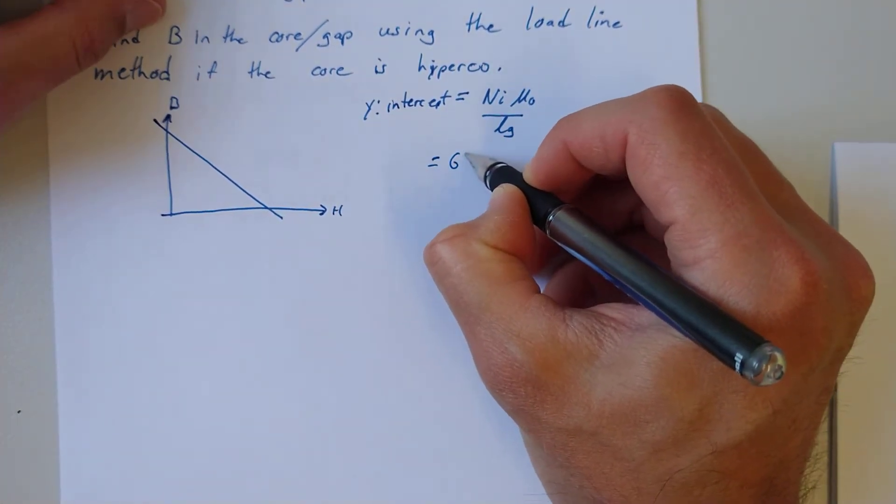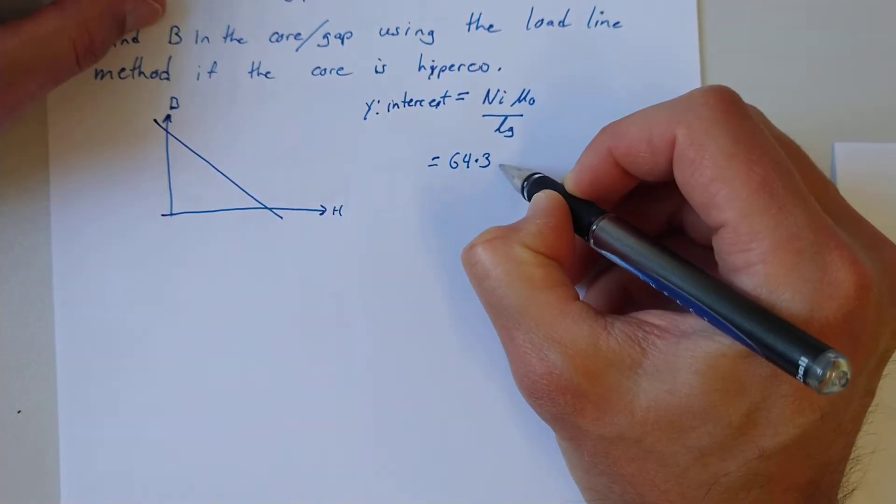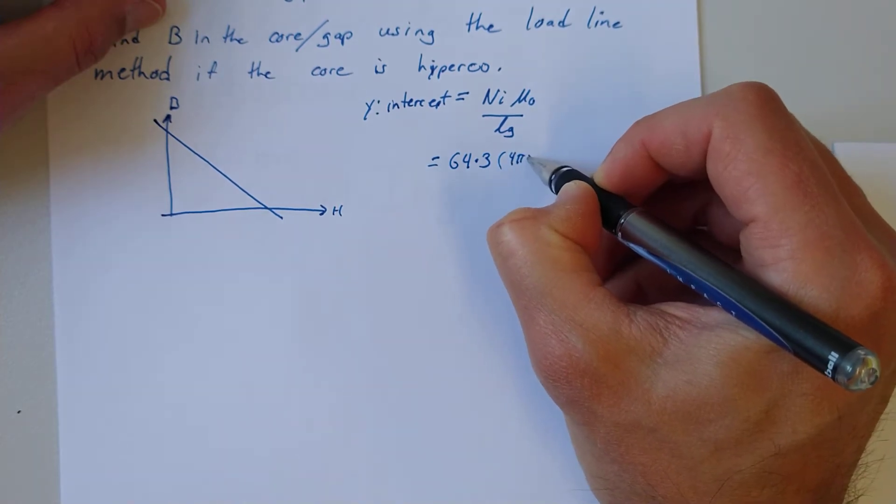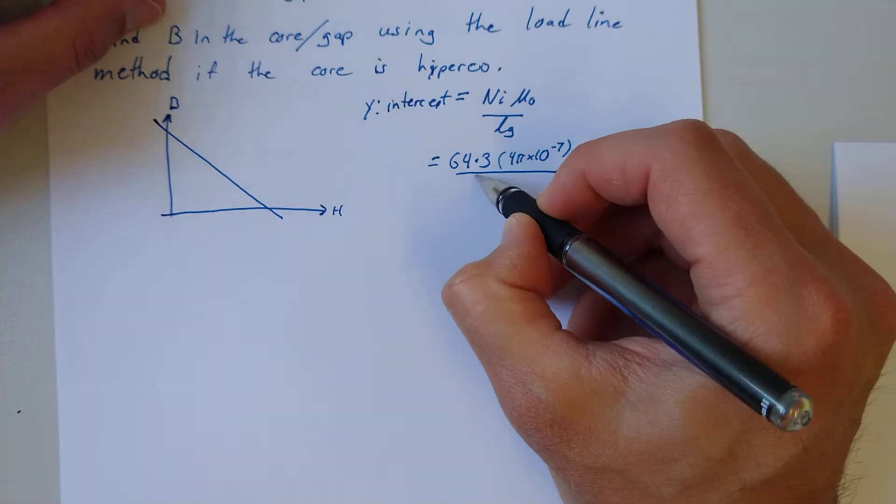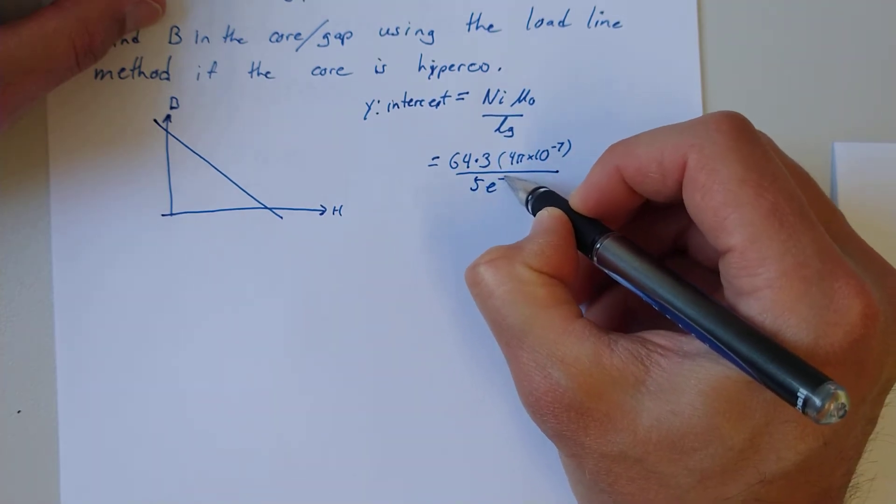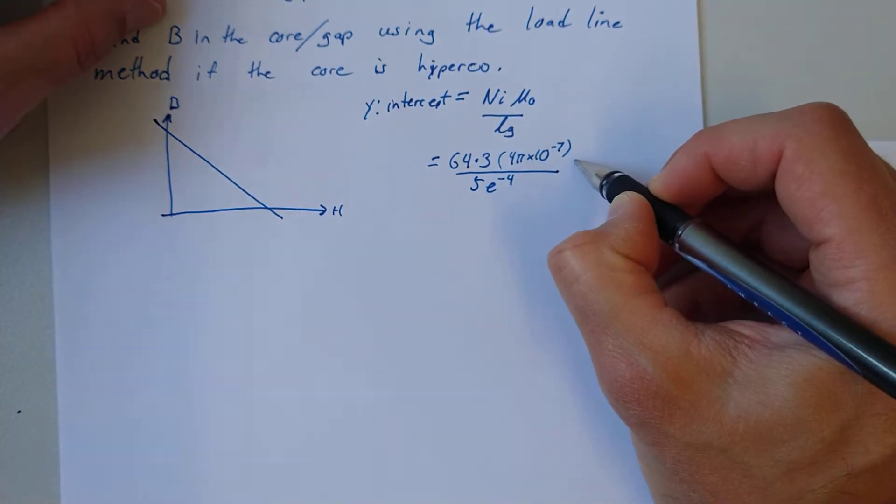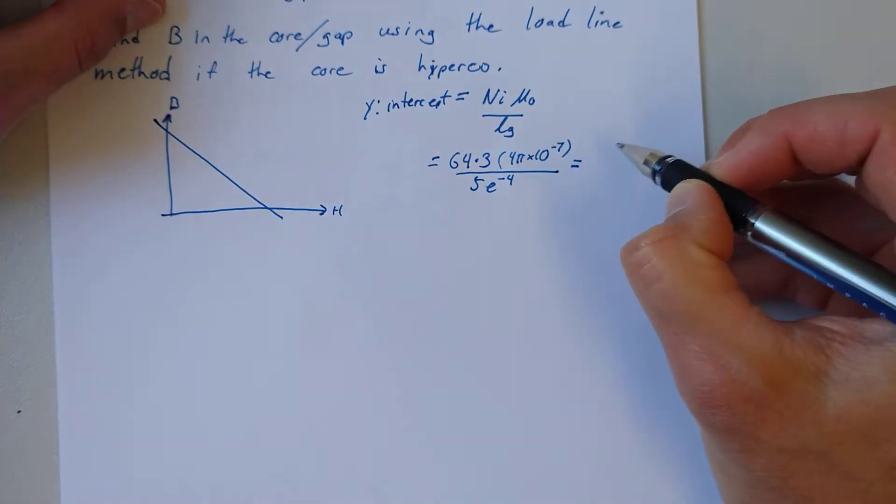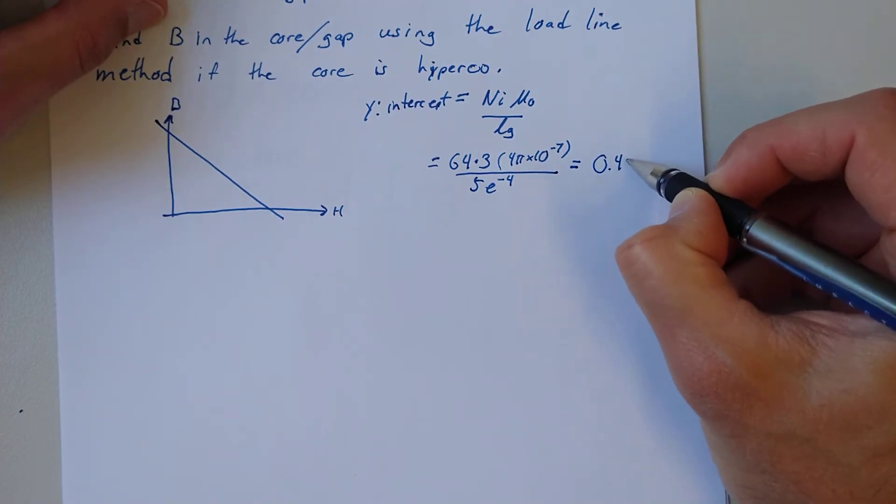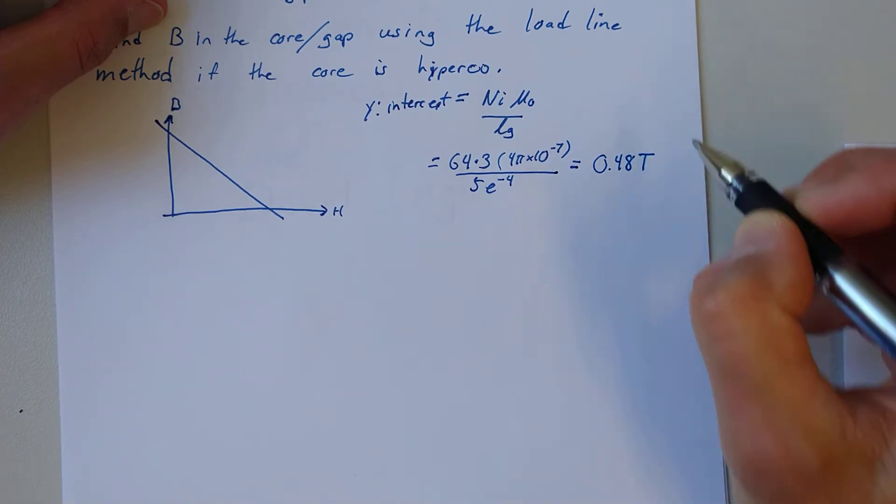In this case, 64 times 3, 4π times 10 to the minus 7, over 5×10⁻⁴, and that is 0.48 Tesla.